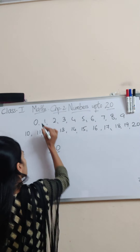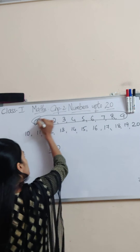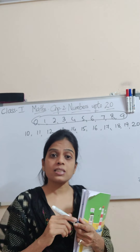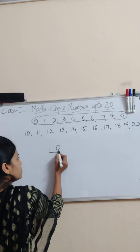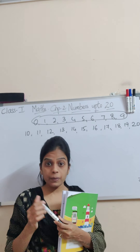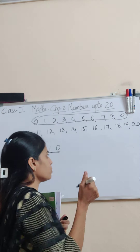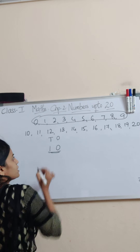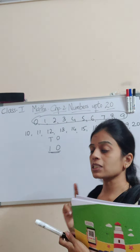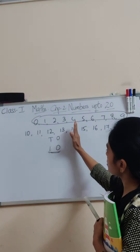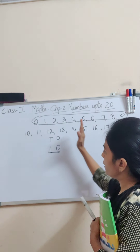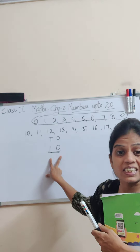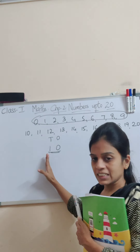When we talk about numbers up to 9, there is only one place — the ones place. But when two digits happen, they can't be in the same place. The right-side number is the 1's place, and the next one on the left is the 10's place. Every two-digit number is grouped into 1's and 10's.